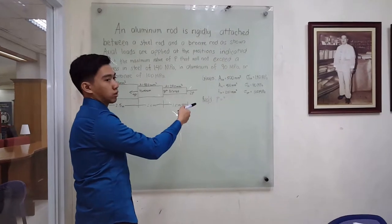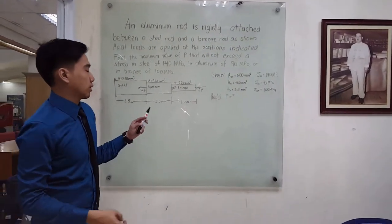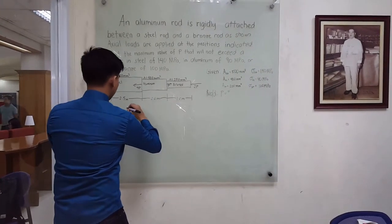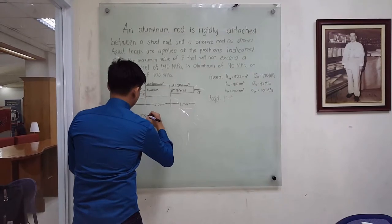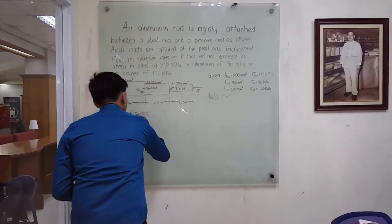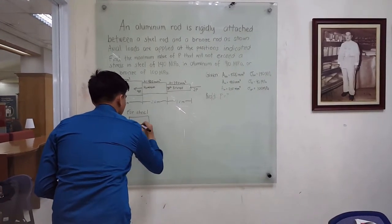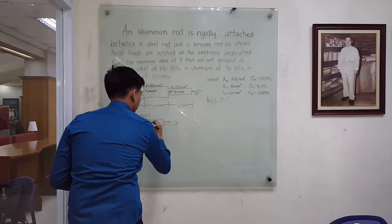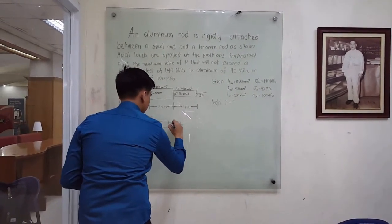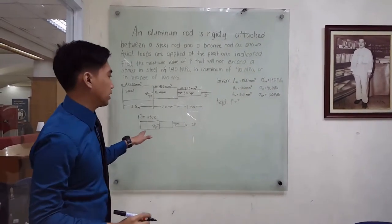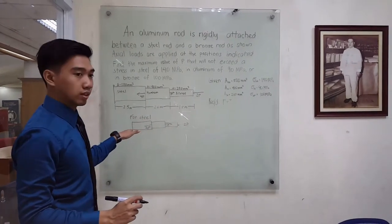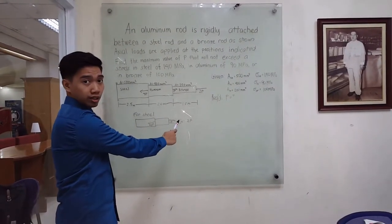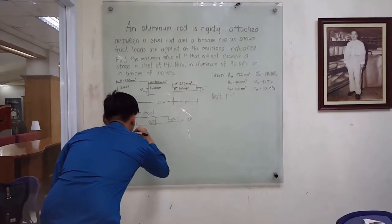In order to solve the maximum value of P, we will use this formula for steel. We will first find the sum of the forces acting in the steel. This is 4P minus P plus 2P, which is equal to 5P.